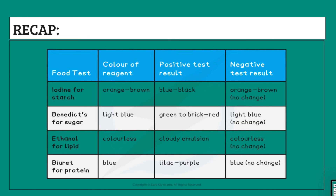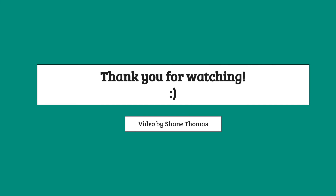Finally, here's the recap for the video. It shows all of the food tests with the color of the reagent, the positive test result, and the negative test result with no change. I hope you enjoyed this video — it was a quick one, but it's really important that you remember all of this. If you have any questions, please let me know in the comments. Thank you so much for watching, and see you next time.